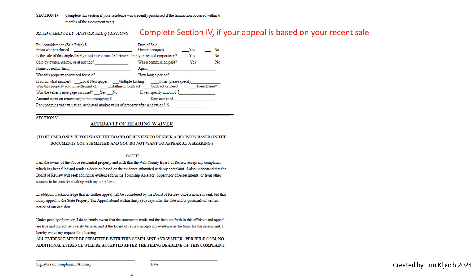On page 4 of the appeal form, you will need to complete section 4 if your appeal is based on the recent sale of your property. If you do not want to appear in front of the Board of Review, sign the waiver. The Board of Review will decide your case based on the evidence submitted.